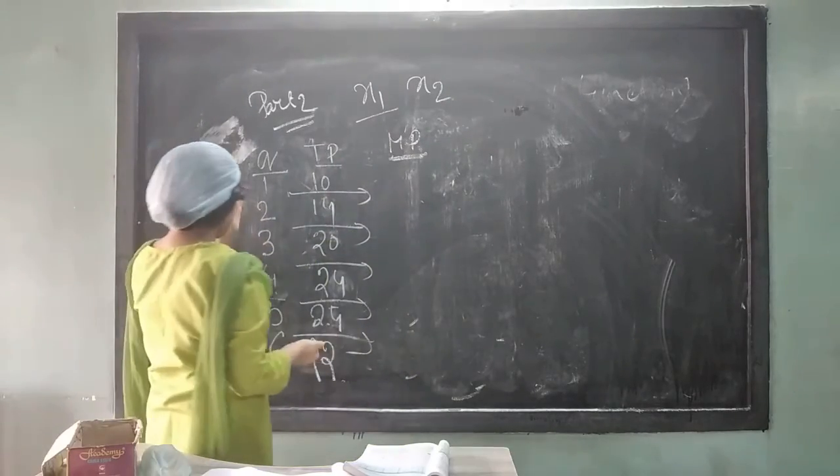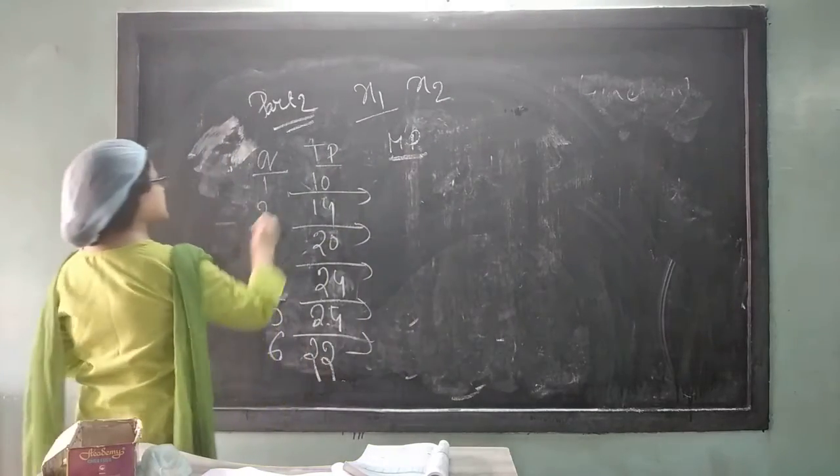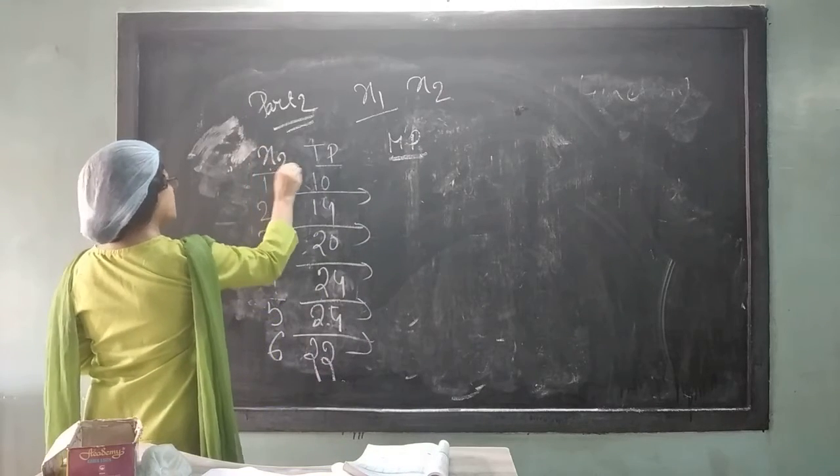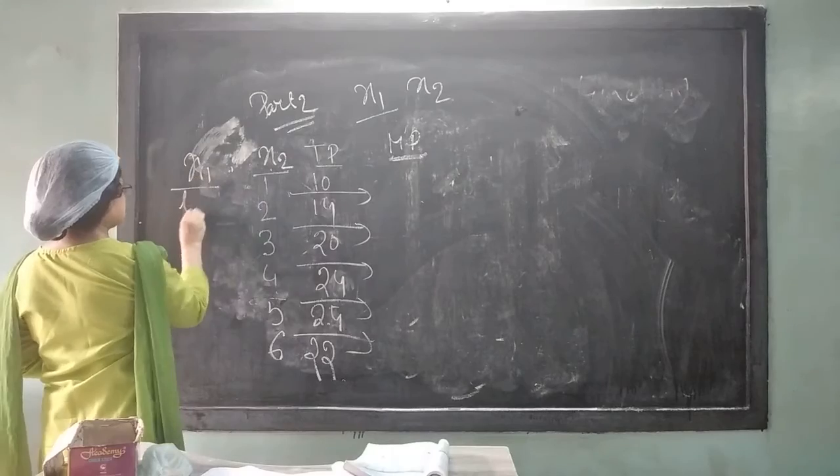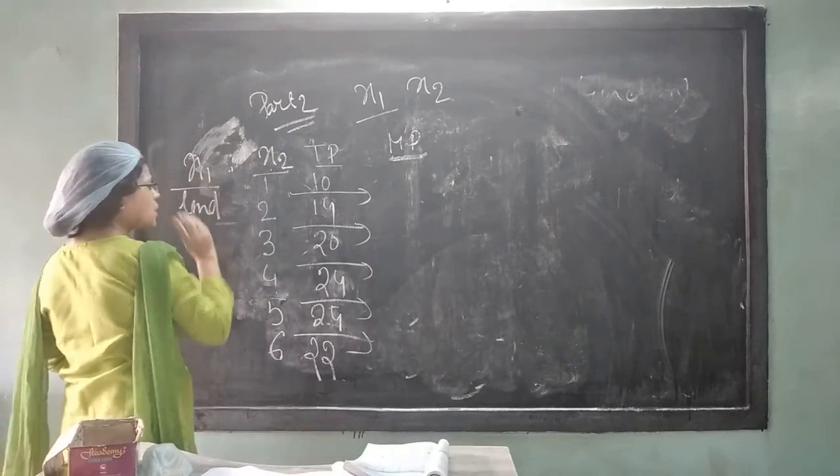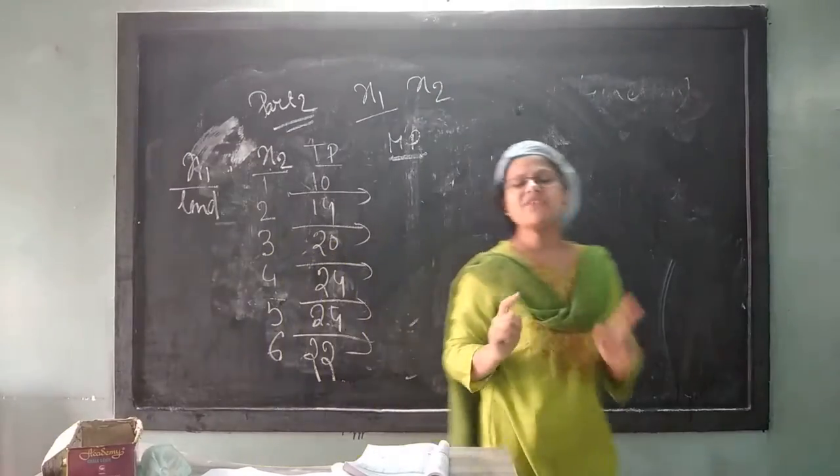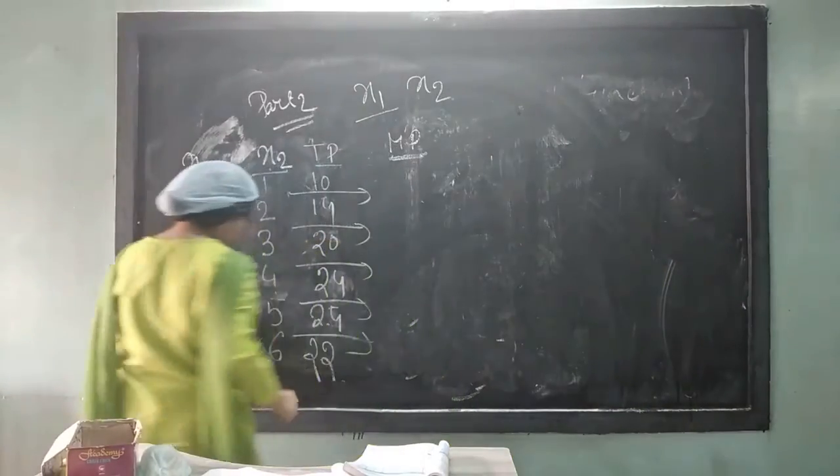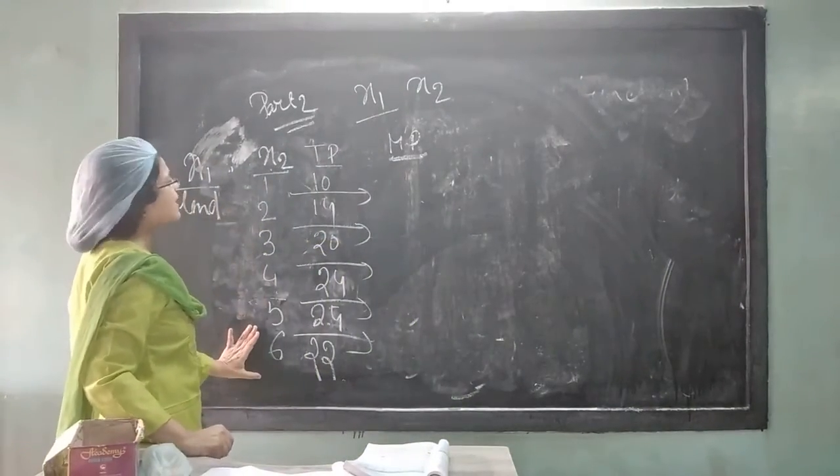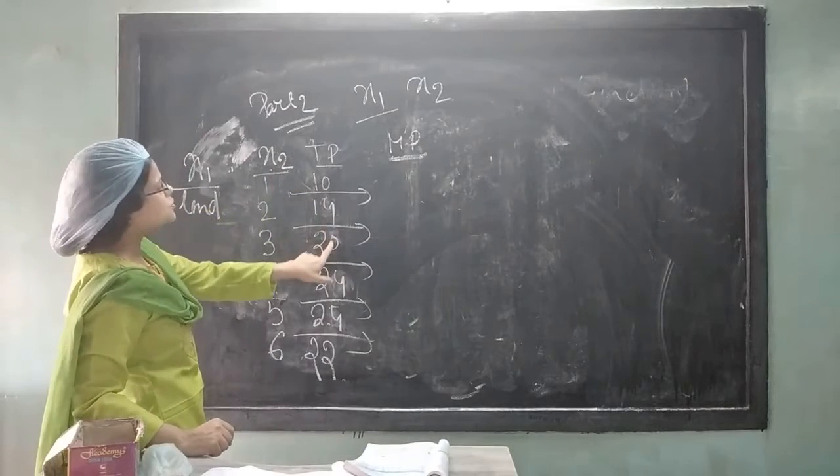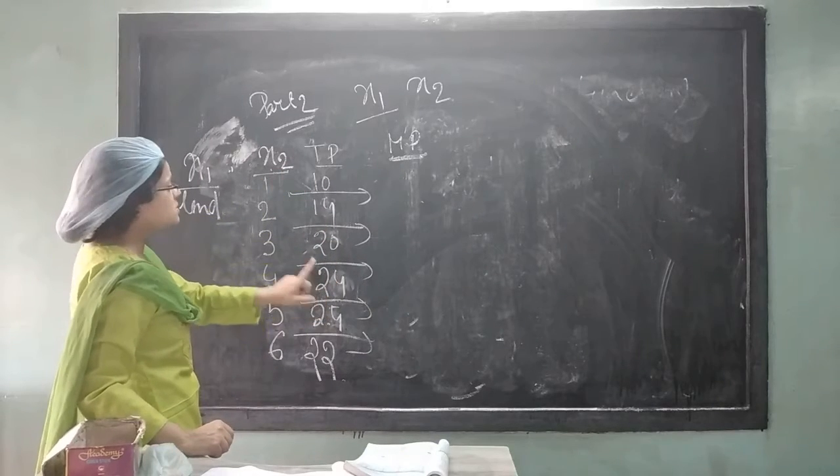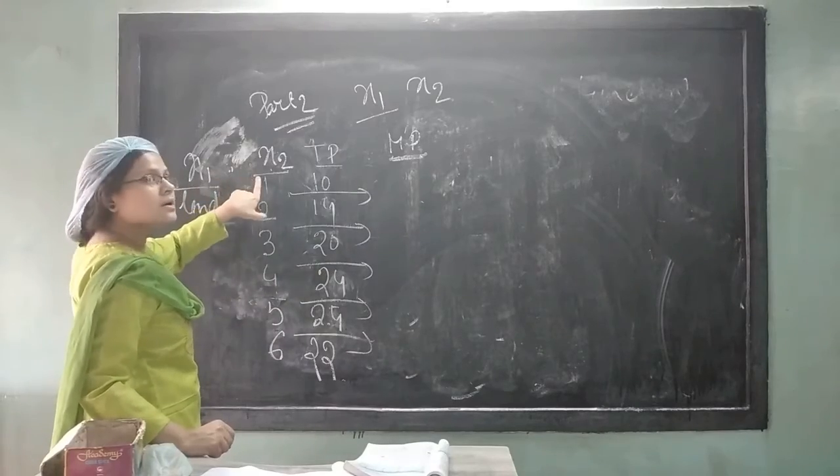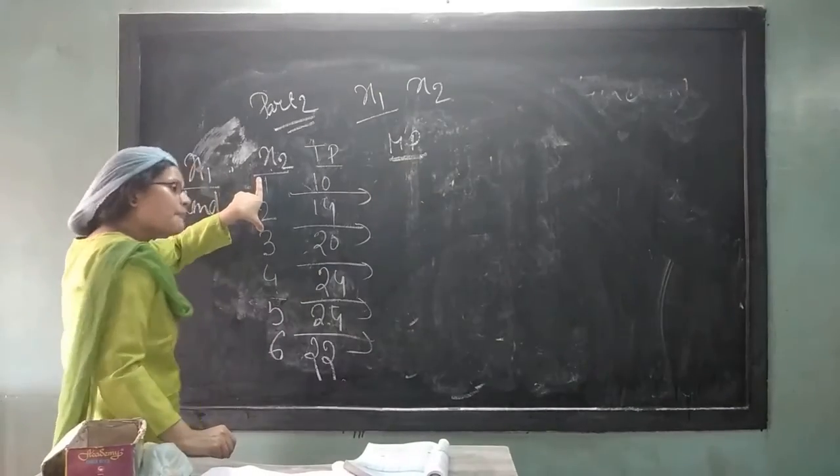Now, we are assuming that land is a fixed factor or we can say this is our X2 and our X1 is labor. So, in a plot of land, if more and more laborers will be applied for the purpose of cultivation, at first, the total output will definitely increase because the fixed factor will absorb the variable factor to some extent.